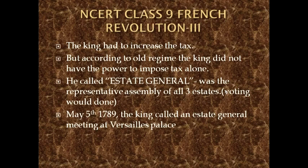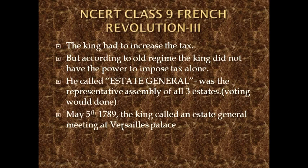This meeting was called the Estates General, and it was the representative assembly of all three states — voting would be done there. On May 5th, 1789, the king called an Estates General meeting at the Versailles Palace, where the king used to live.